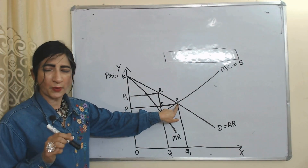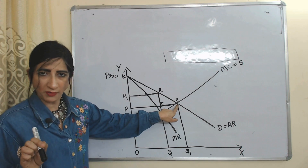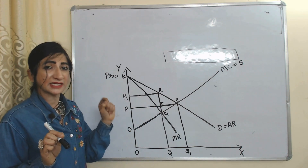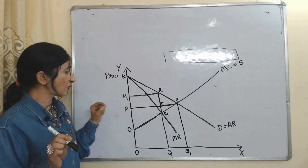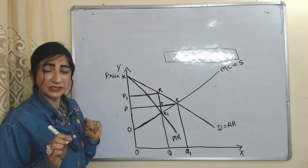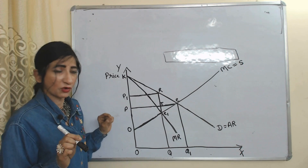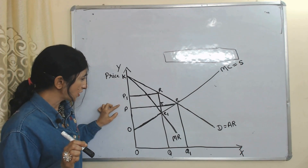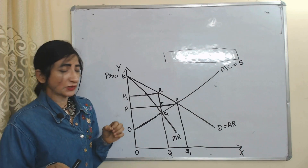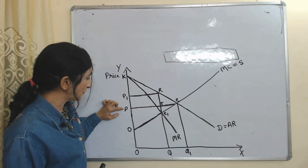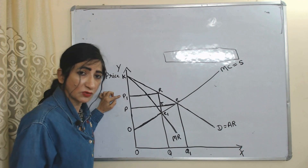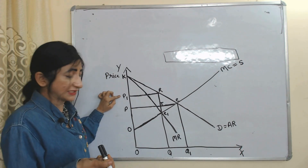E is the equilibrium point in case of perfect competition. Consumer surplus in case of perfect competition is equal to P, K, E and producer surplus in case of perfect competition is equal to O, P, E. But in case of monopoly, price increases from P to P1, so consumer surplus is reduced but producer surplus is increased.